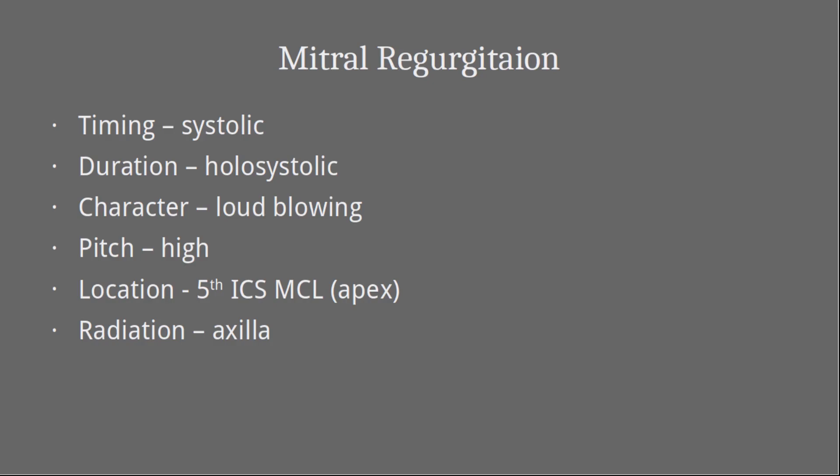The mitral regurgitation murmur occurs during the systolic phase. It is a holosystolic murmur, meaning it occurs throughout systole. Its character is loud and blowing, its pitch is high, and it is best heard at the fifth intercostal space at the cardiac apex. This murmur can radiate to the axilla.